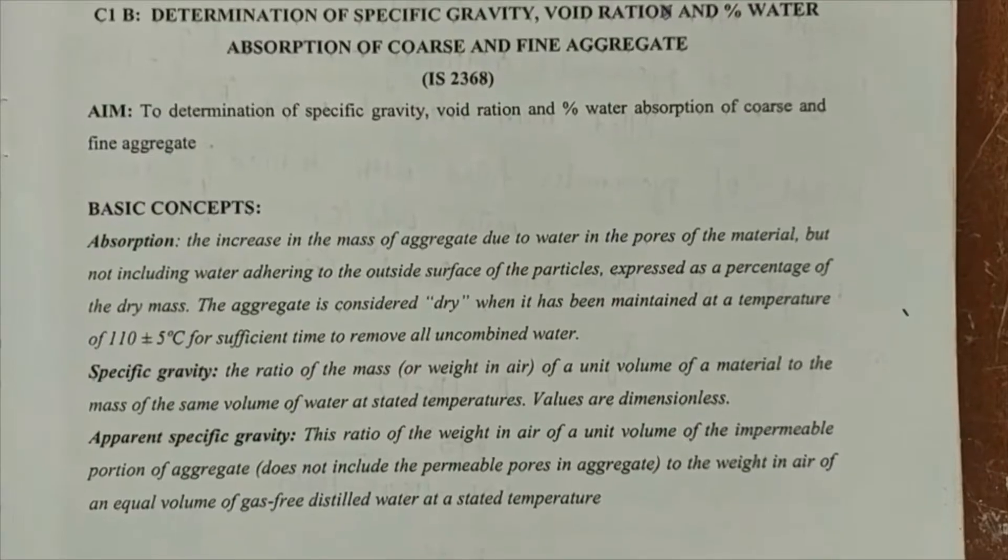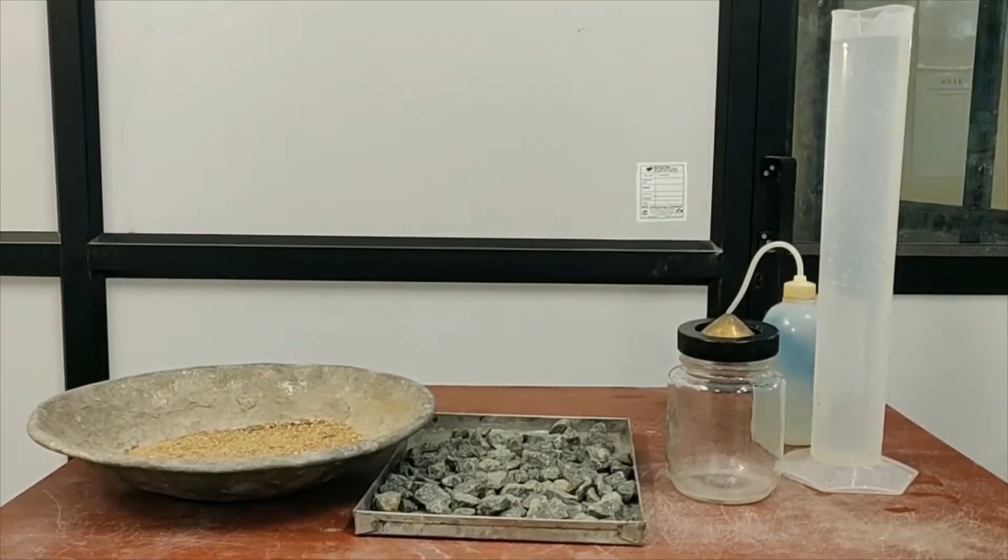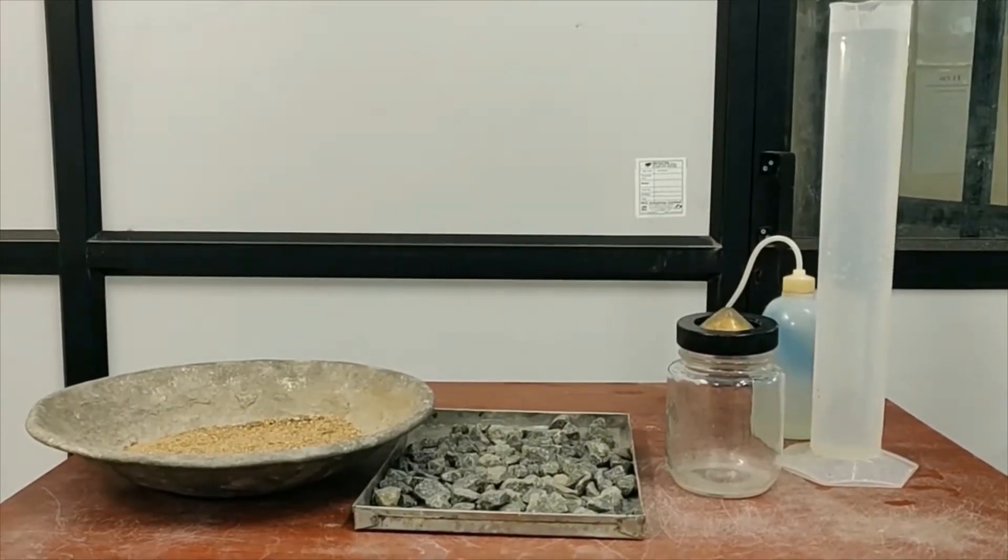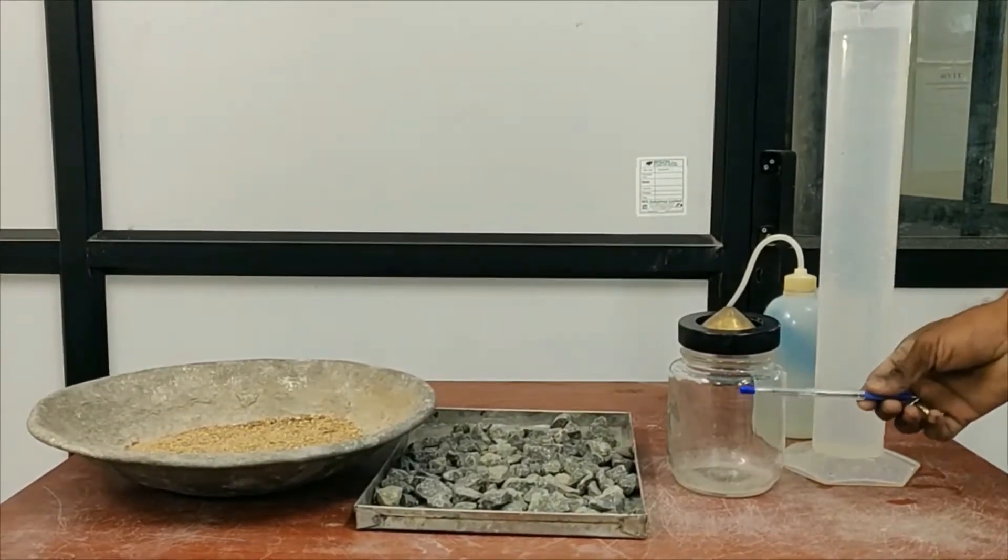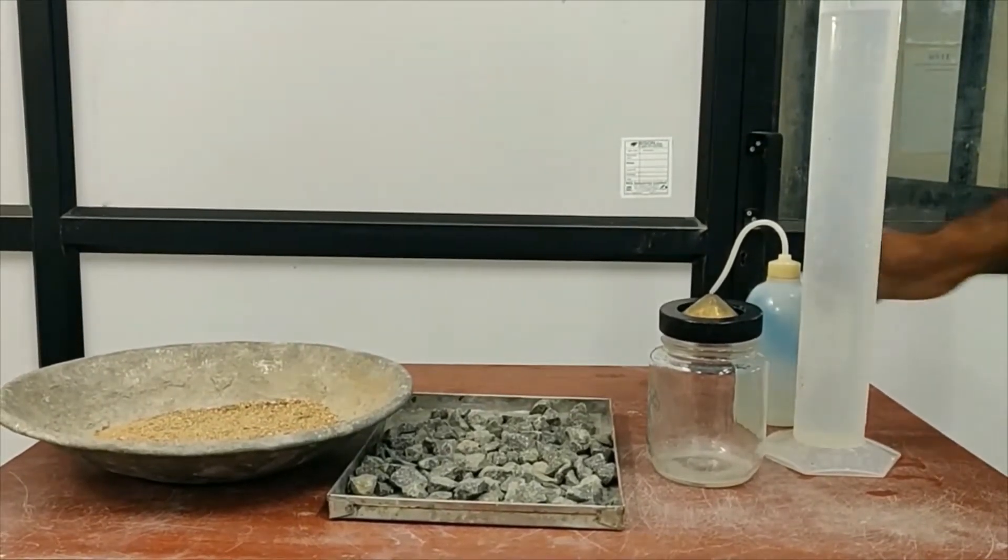The apparatus required for determination of specific gravity are the pycnometer jar, the coarse aggregate sample, and water for filling the jar.